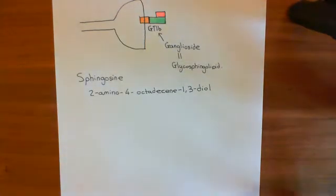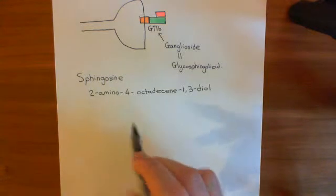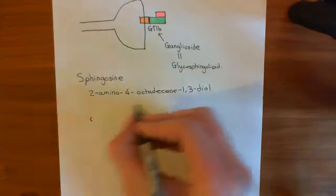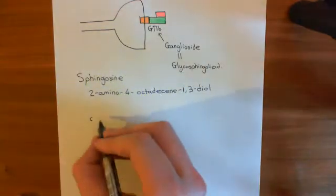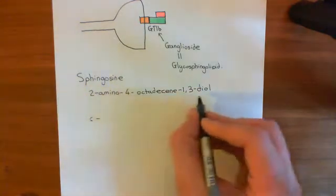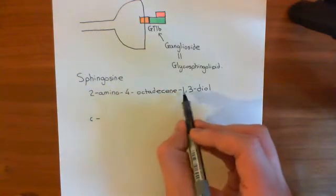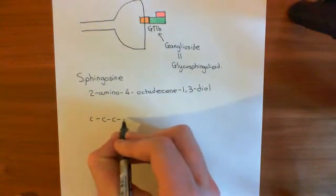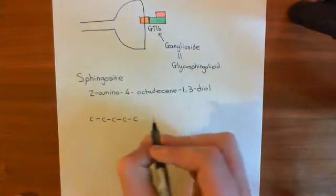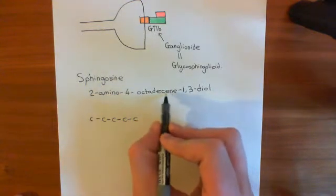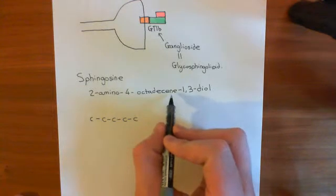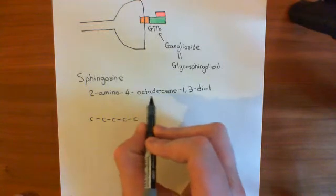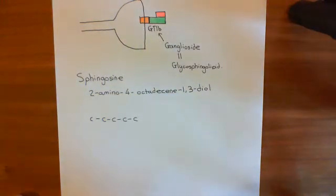Basically, it's an 18-carbon molecule. The only carbons that are actually interesting are the first, second, third, fourth, and fifth. The 4-octadecine part means that you've got a double bond — this tells you it's on the fourth carbon, meaning it must be between the fourth and the fifth carbon. That's why the fifth carbon becomes important.